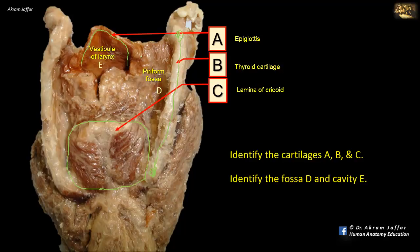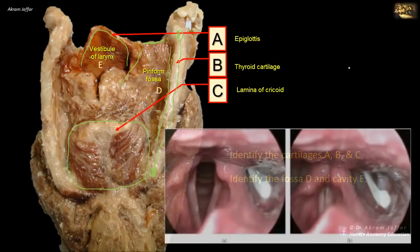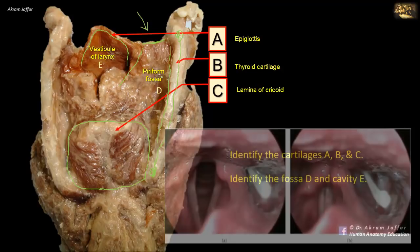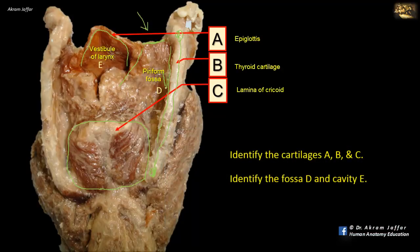The piriform fossa is bounded by the aryepiglottic fold and the lateral glossoepiglottic fold superiorly, and on the lateral side by the lamina of the thyroid cartilage and the thyrohyoid membrane. The piriform recess is one of the places where pointed and sharp ingested material might get stuck, like a fish bone or chicken bone — these may lodge either in the valleculae above the glossoepiglottic fold or in the piriform recess.